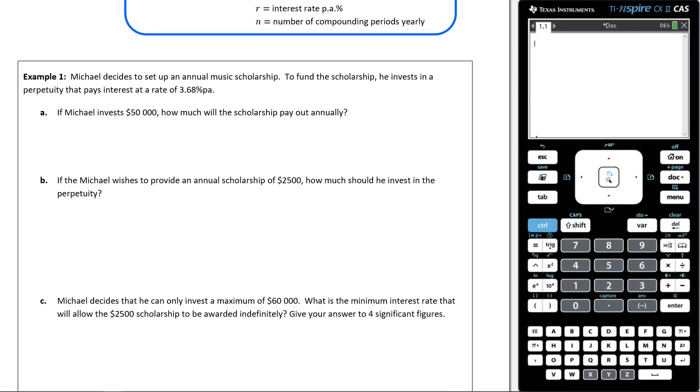Alright, let us answer this question before us. It says Michael decides to set up an annual music scholarship to fund the scholarship. He invests in a perpetuity that pays interest at a rate of 3.68% per annum. If Michael invests $50,000, how much will the scholarship pay out annually?